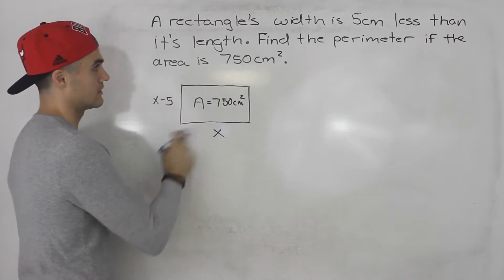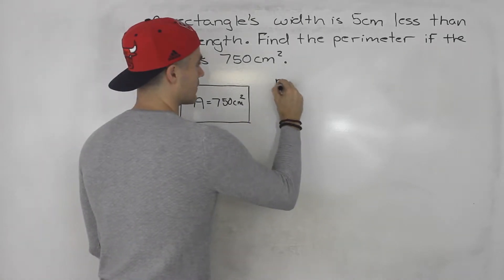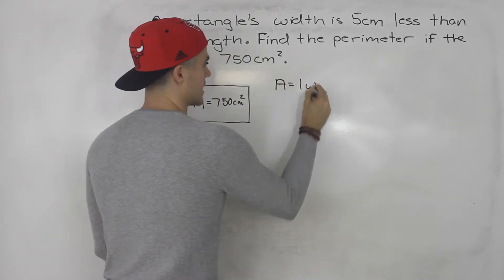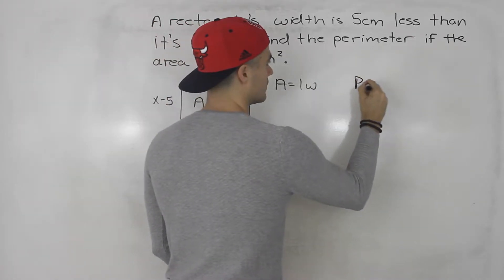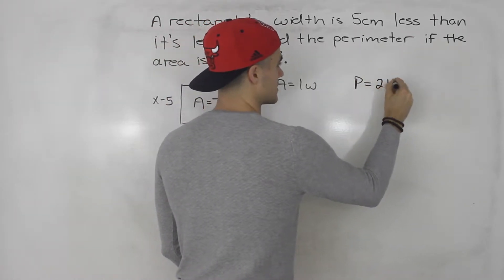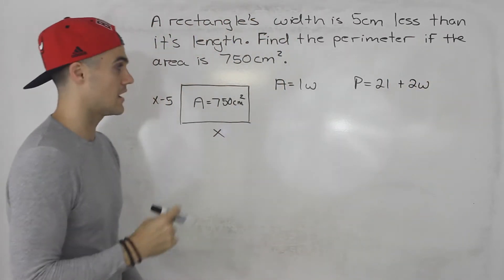We know that area is equal to length times width, and we know that the perimeter is equal to two times the length plus two times the width. We would just add all the sides up.